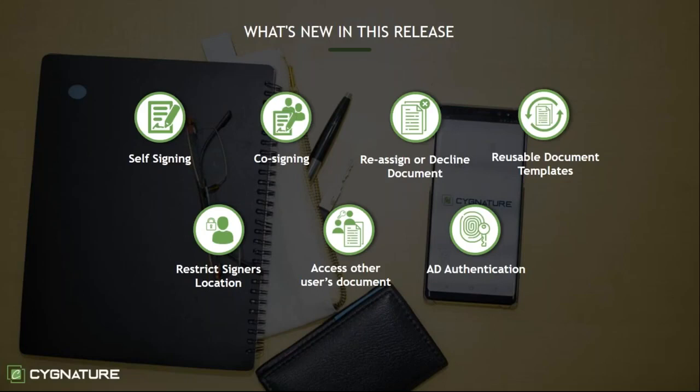Reusable document templates allow you to define a template with the number of signers, number of observers, and type of signature, and reuse the same template again and again — just changing the signers as needed. Next is the ability to restrict a signer's location, so if you want a document signed from a particular place, you can restrict the signing to that geographic area. If the signer is outside that location, they won't be able to sign the document.